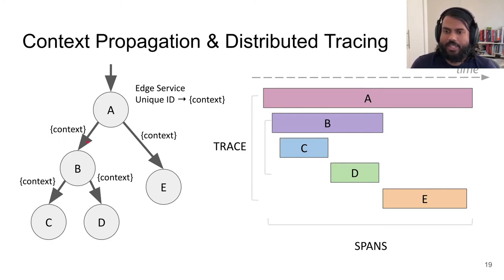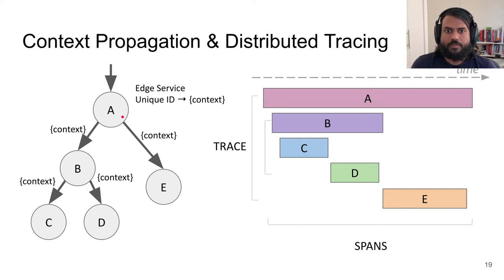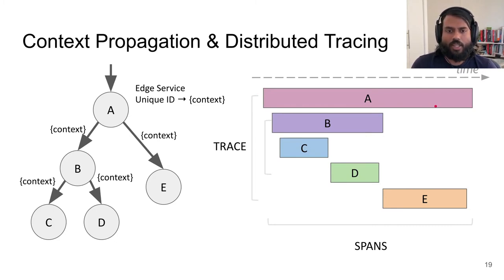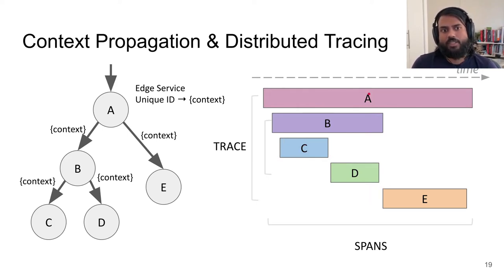The main thing this context allows tracing systems to do is assign causality. In this particular case, Jaeger would be able to deduce that service B was called by service A and by nothing else. On the right side we have a Gantt chart view representing the same data but with a time dimension — so latency and a start time are added to these spans. Spans may also contain additional information such as logs or key-value pairs known as tags.